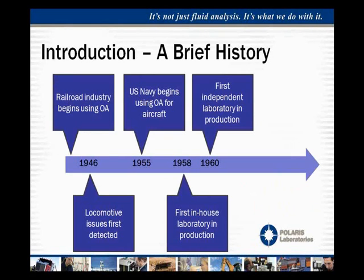Oil analysis actually began a little bit after World War II within the railroad industry, where they were using chemical type testing — basic wet testing of their oil to determine what metals were being generated within their engines. This occurred about the time the industry transitioned from steam locomotives over to diesel-powered locomotives. Around 1946, they were able to detect their first issue — they had generated enough wear metals to detect an actual failure getting ready to occur.